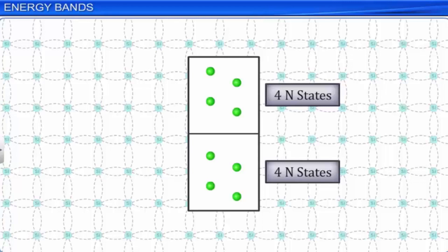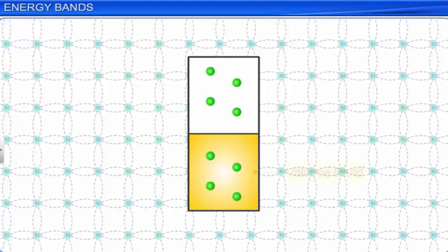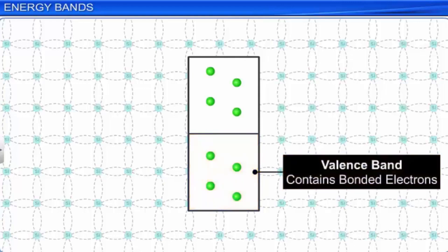One of the 4n states is completely filled. The lower, completely filled energy band is called the valence band. This valence band is formed by the valence electrons, and here electrons are bound to each other, so there is no mobility.